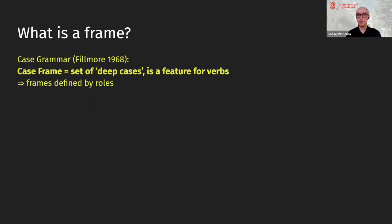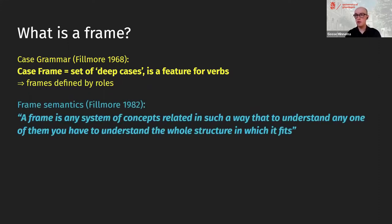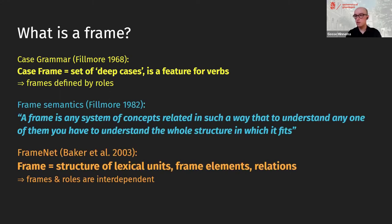Let's talk about what a frame actually is. Going back to case grammar, frames were clearly defined by deep cases or semantic roles — there were case frames, which are basically sets of semantic roles. Then Fillmore wrote that a frame is any system of concepts related in such a way that to understand any one of them, you have to understand the whole structure in which it fits. So frames became an unbreakable, interdependent structure.